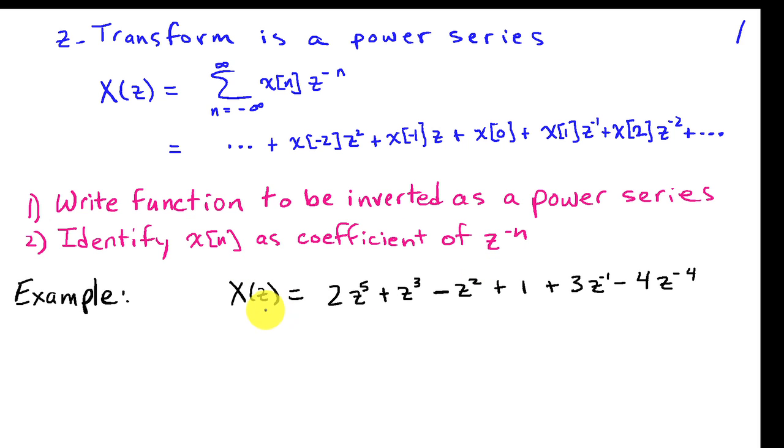Let's suppose I have an X of Z here that is 2 Z to the fifth plus Z cubed minus Z squared plus 1 plus 3 Z inverse minus 4 Z to the minus 4. Well, this is the form of a power series. It's a finite power series. And we can pick off the coefficients as our values of X of N.